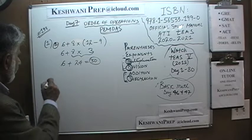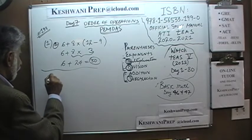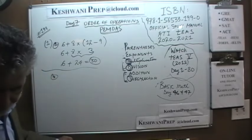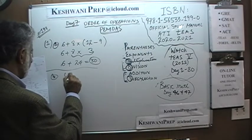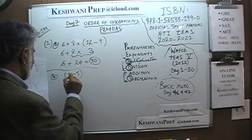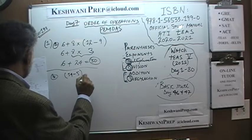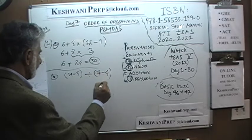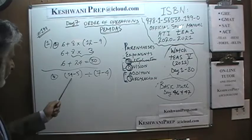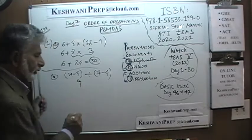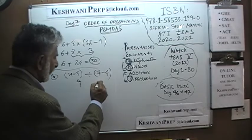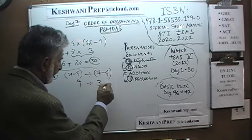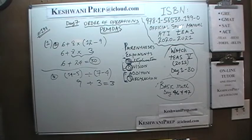Part B says 14 minus 5 divided by 7 minus 4. You do the first parenthesis first: 14 minus 5 is just 9. Then that parenthesis: 7 minus 4 is 3. 9 divided by 3 is 3. Very simple. Very straightforward.